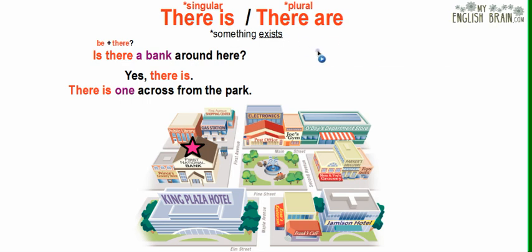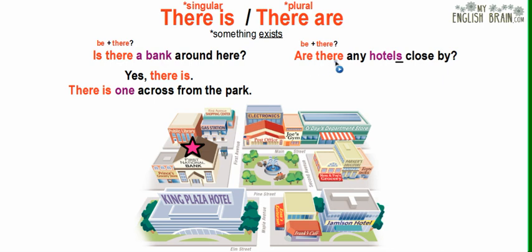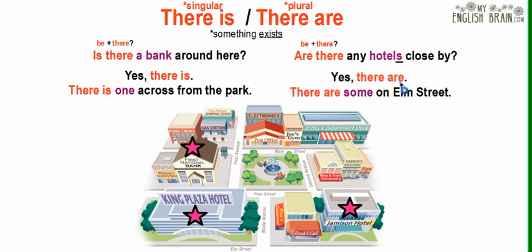With 'there are,' the question is: Are there any hotels close by? Again, the verb 'be' comes first, then 'there.' We use 'are' because the object is plural — hotels. Looking at the map, there are two hotels in the city. The answer: Yes, there are — there are some on Elm Street. Remember, 'there is' for singular, 'there are' for plural, and the verb 'be' comes first in questions.